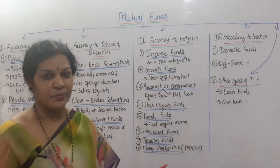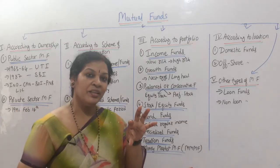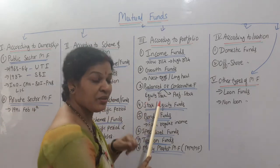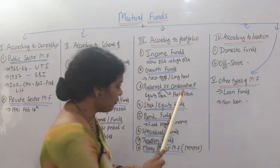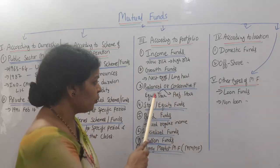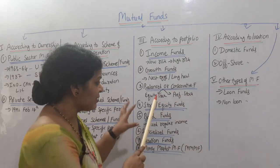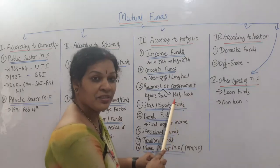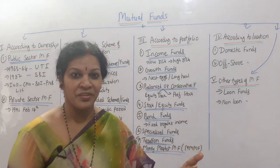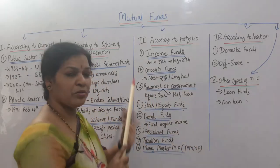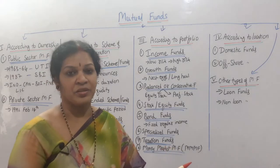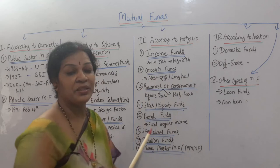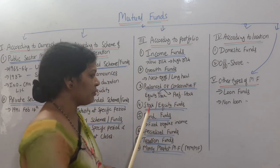The third type under portfolio is balanced or conservative funds. Here, the investment is divided into two parts — one part is invested in equity stock and the other in preference stock. Equity stock carries some risk, while preference stock is safer. Together you have a balance of risk and safety — that is why we call it balanced or conservative funds.